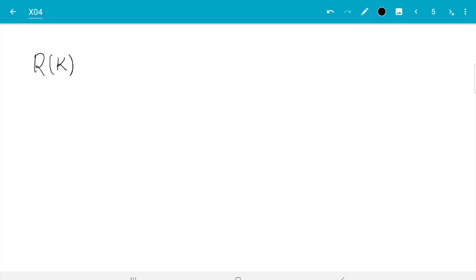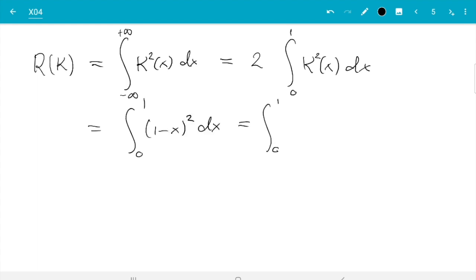Then roughness of k is integral k squared of x dx from minus infinity to plus infinity. And again, by symmetry, I can write 2 times integral 0 to 1 k squared of x dx. And then I get 1 minus x squared dx. And I don't try to be clever. I just write 1 minus 2x plus x squared.